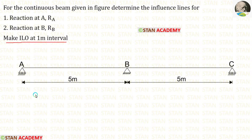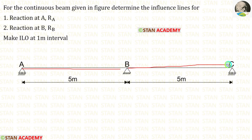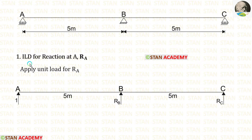In this question, a continuous beam is given. In this continuous beam, we are having two spans: span AB and span BC. Both of the spans are 5 meters long. First, let us make the influence line diagrams for the reaction at A.